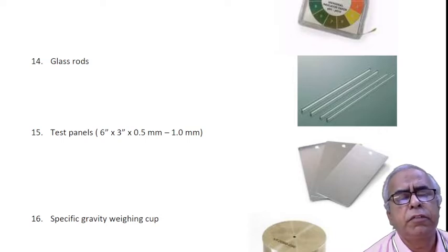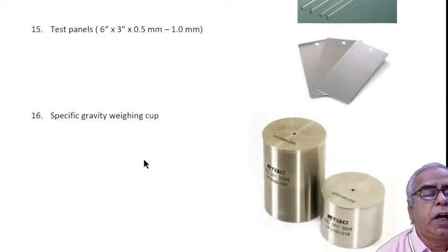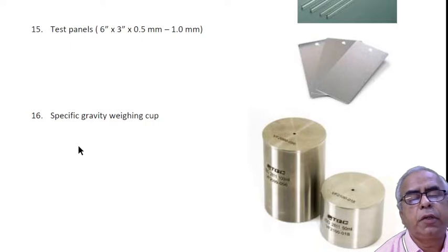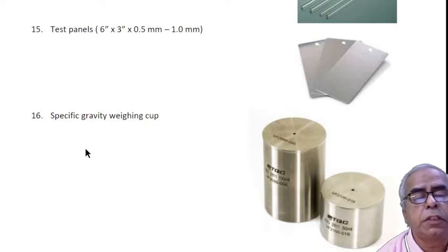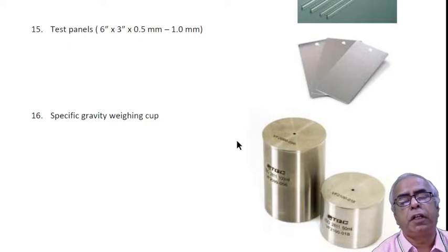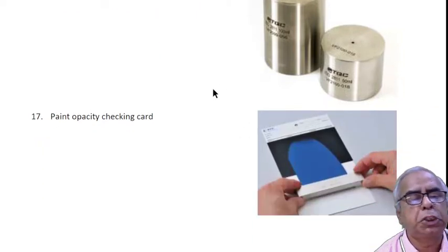The thickness may vary from 0.5 mm to 1 mm. For studying the specific gravity, particularly for paint and resins, you can use this specific gravity weighing cup. By weight by volume we can measure.